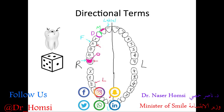For the posterior teeth, the facial surfaces have a special name — they're called the buccal surface. That's because these posterior teeth contact the inside of the cheek, which is associated with the root 'buccal,' as in the buccinator muscle. So 'buccal' distinguishes the facial surfaces of posterior teeth from those of anterior teeth.